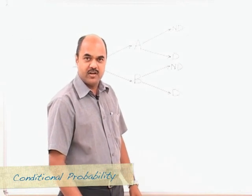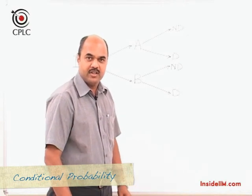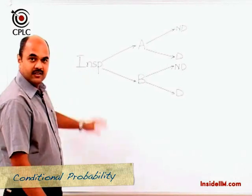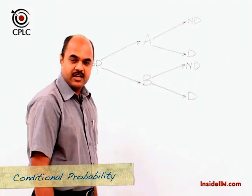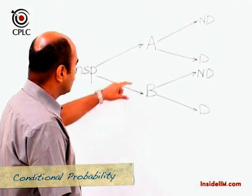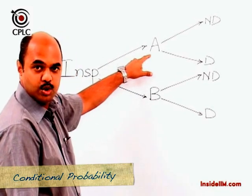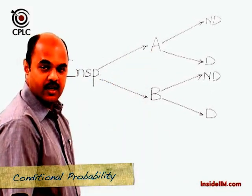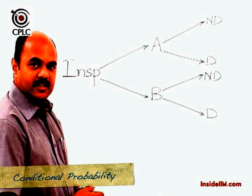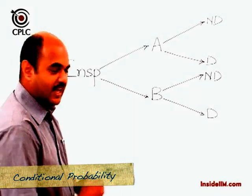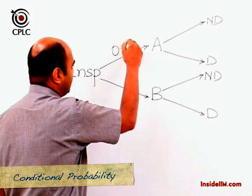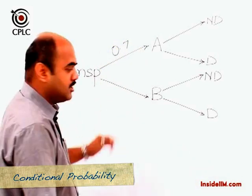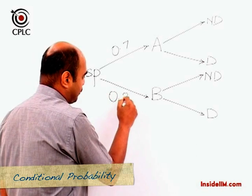To understand the concept of conditional probability, let's look at this example. We have a factory inspector who randomly picks up an article, and there are two machines he can choose from: machine A and machine B. The probability that he picks up an article from machine A is 0.7, and the probability that he picks up an article from machine B is 0.3.